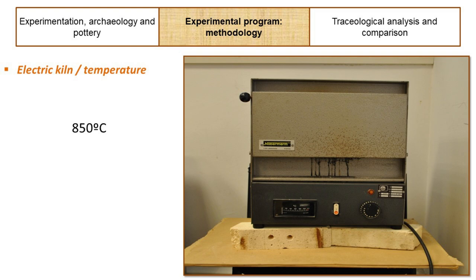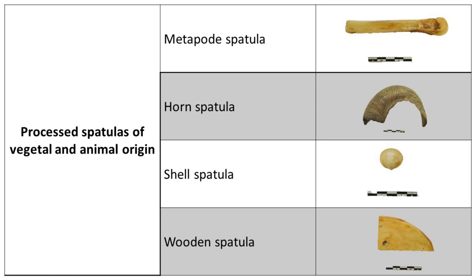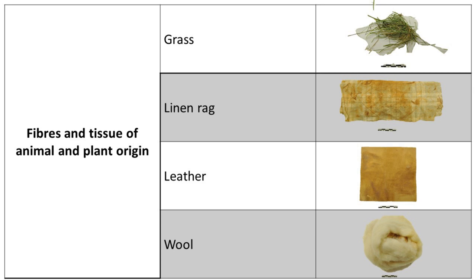We have selected 11 types of tools, grouped into three groups. Tools of mineral origin, such as pebble, flint spatula and pottery spatula. Processed spatulas of vegetal and animal origin, such as metapode, horn, shell and wooden spatula. And finally, fibrous and tissue materials of animal and plant origin, such as grass, linen rug, leather and wool.